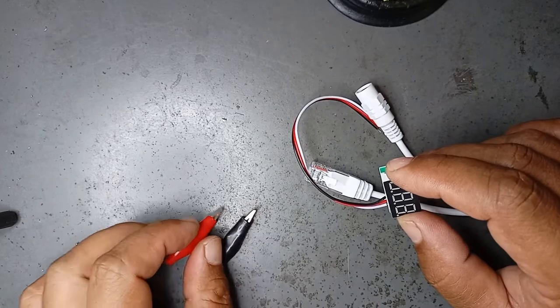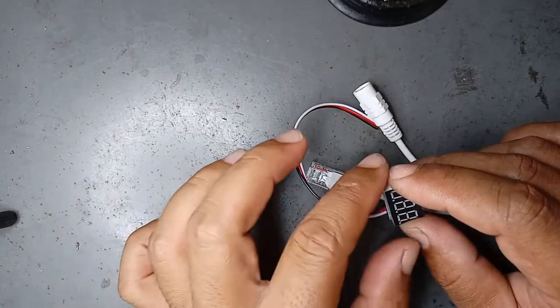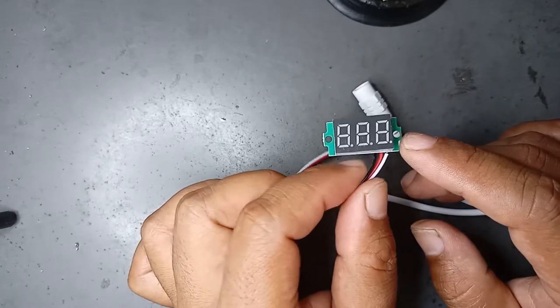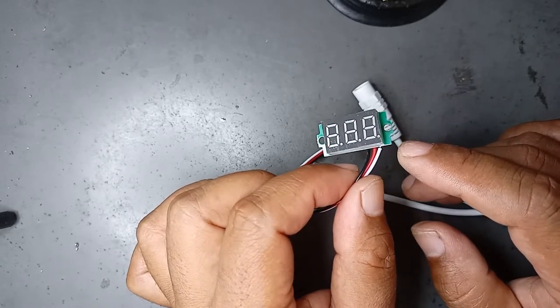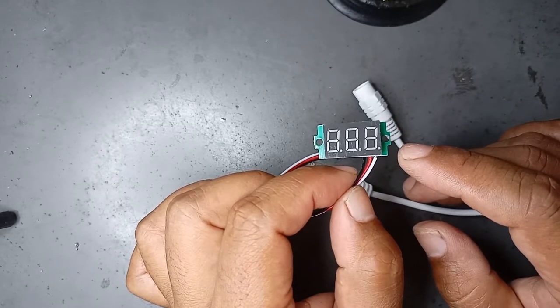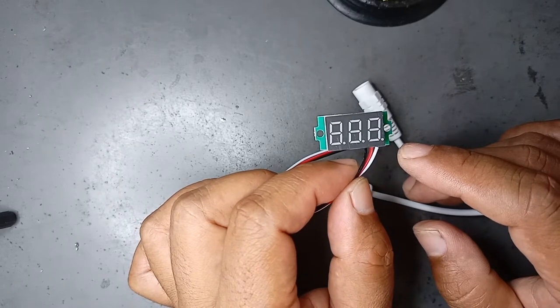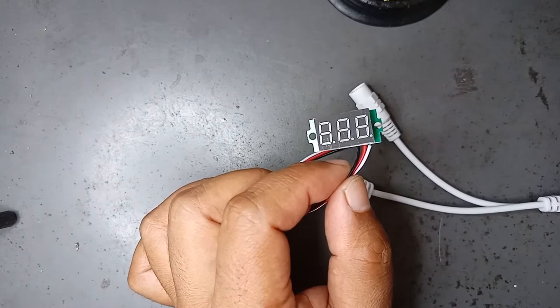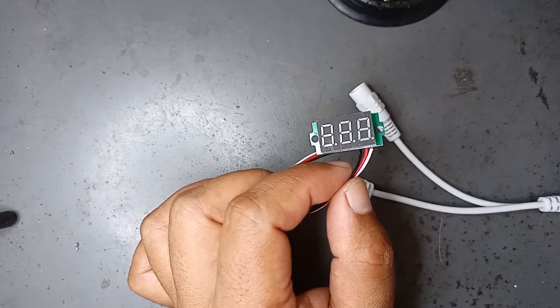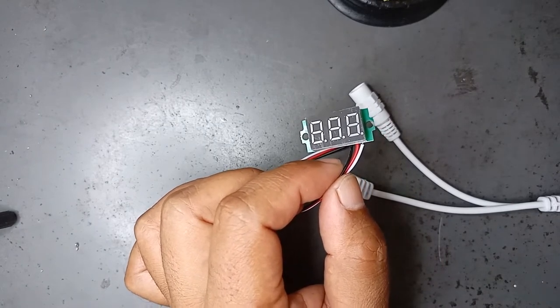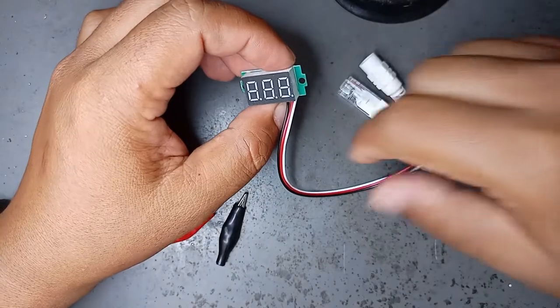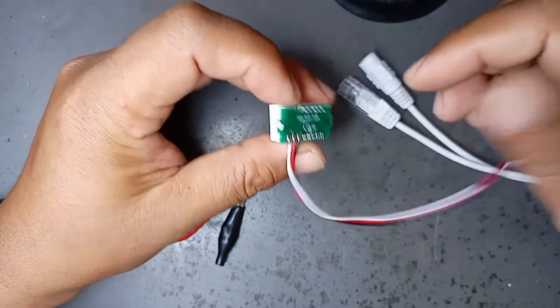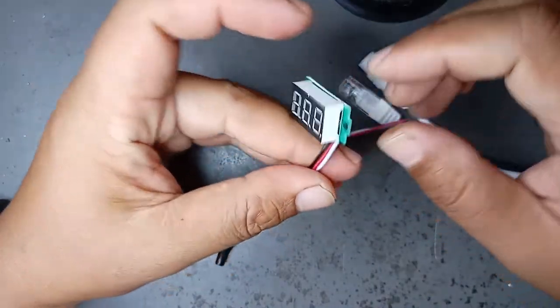From three combination inputs, we will be able to rank in the voltmeter, so we can make it easier for us to measure. Let's start assembling it. First, let me explain about this voltmeter.